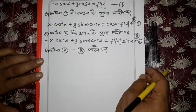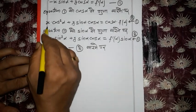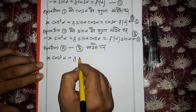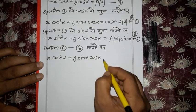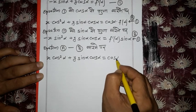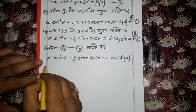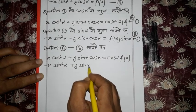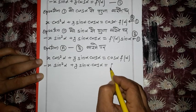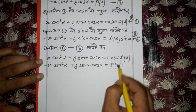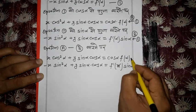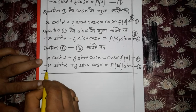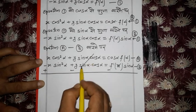Writing out (a) minus (b): x cos²α + y sin α cos α = cos α · f(α), minus [-x sin²α + y sin α cos α = f'(α) sin α]. The y sin α cos α terms cancel out, giving x(cos²α + sin²α) = cos α · f(α) - f'(α) sin α.